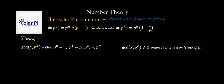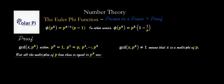For example, it could be like 4 times p, and the greatest common divisor of 4 times p and p to the k is going to be p, not 1. Or it could be 42 times p to the fifth, and the greatest common divisor of 42 times p to the fifth and p to the k is p to the fifth, not 1. The point is that if the gcd of x and p to the k is not 1, then x has got to be a multiple of p.